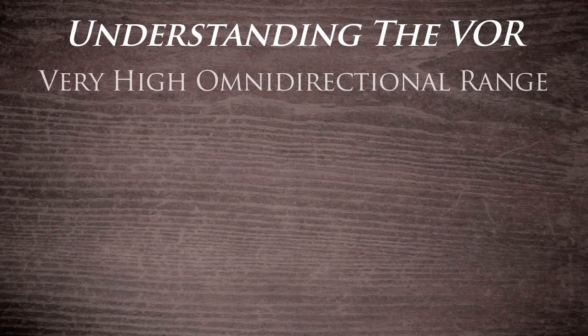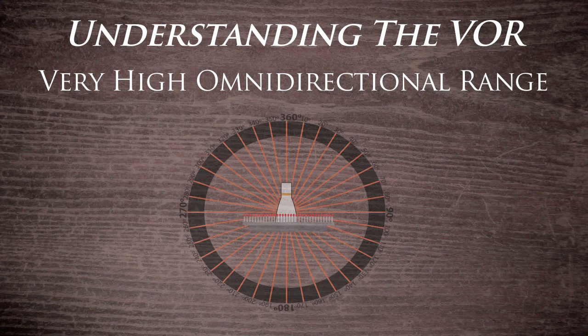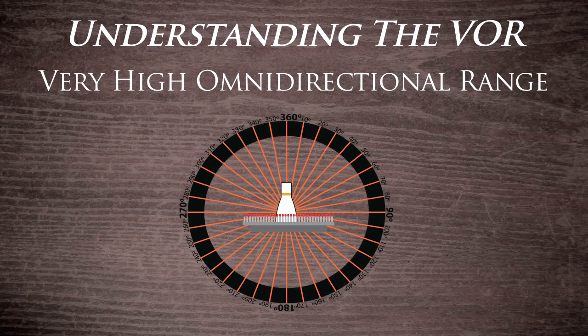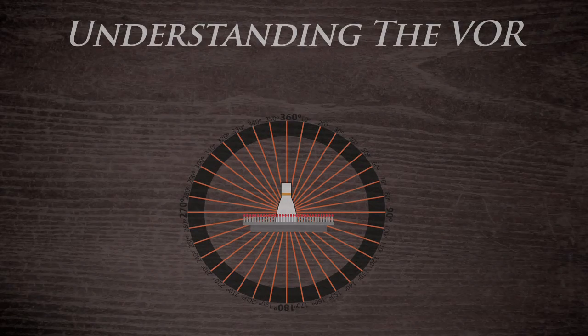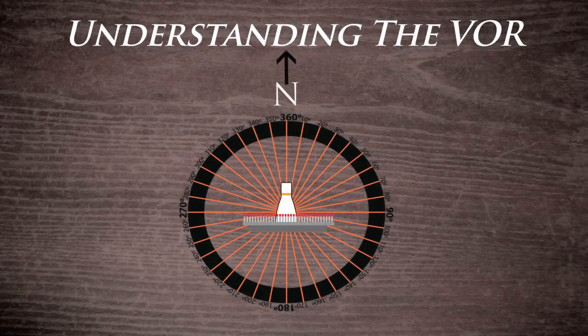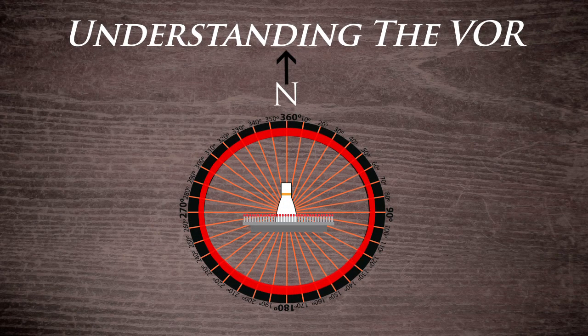Standing for Very High Frequency Omnidirectional Range, a VOR uses a ground station to provide azimuth information to the aircraft. The station is oriented to magnetic north and sends out 360 radials. Each radial represents a heading from the station.